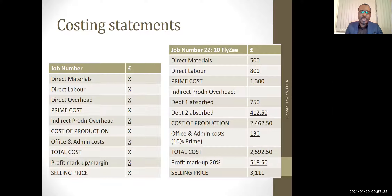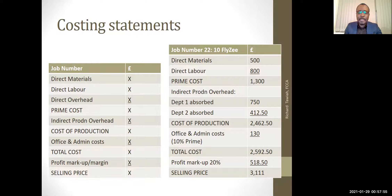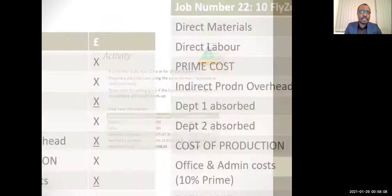Take the example of the Flyzy guitar. Direct materials: £500. Direct labor: £800. Add them to get a prime cost. Then apply department one absorption and department two absorption. We'll use illustrative figures for now. Assume office and admin costs are 10% of the prime cost. With a 20% markup — if total cost is £2,592.50, find 20% of it, which is £518.50. Add it up and you get £3,111 as the selling price of the Flyzy.